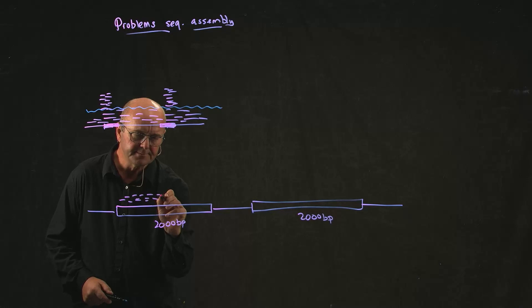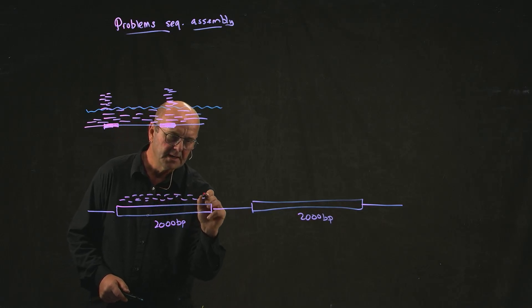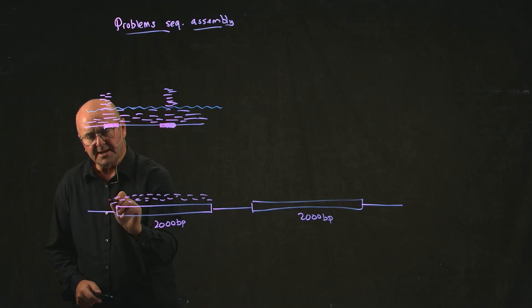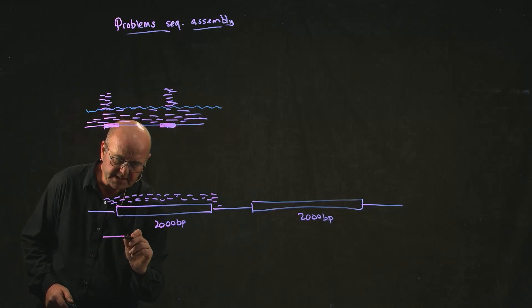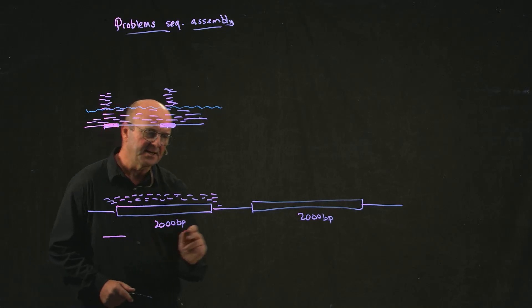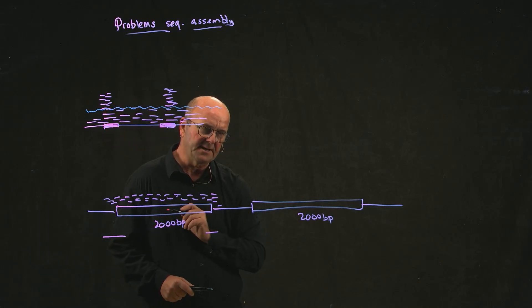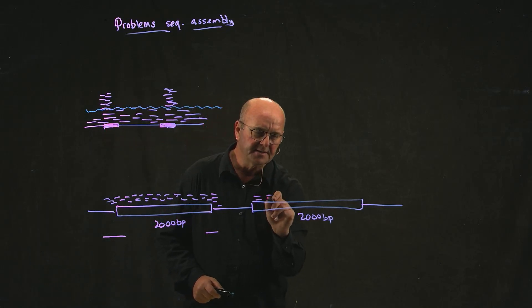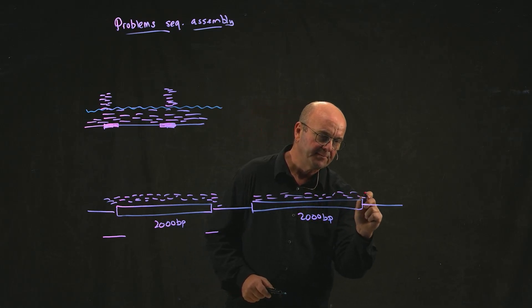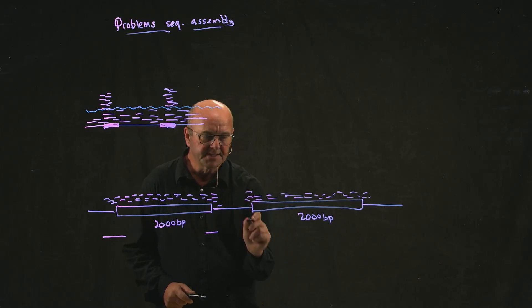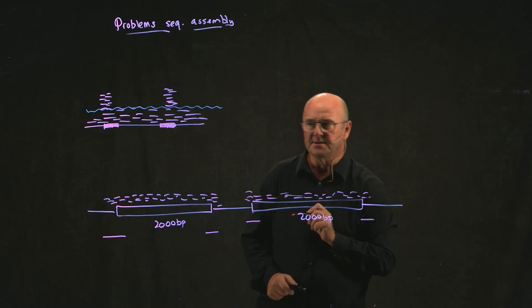When you do the assembly, you end up with basically a sequence that overlaps this end and a sequence that overlaps this end. And then the same over here. And you'll have a sequence that overlaps this end and a sequence that overlaps this end.